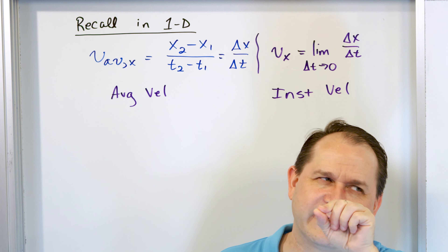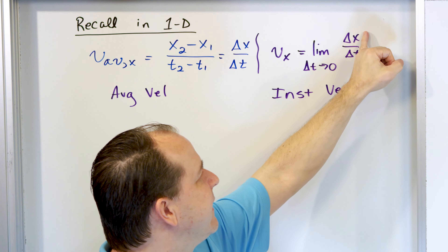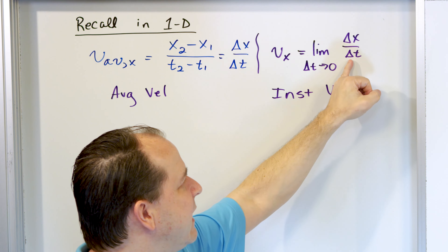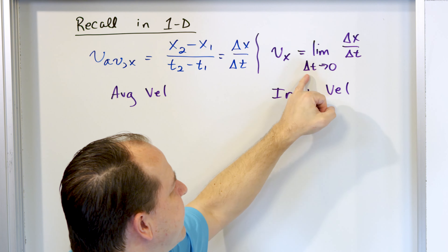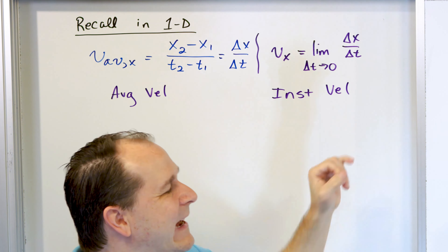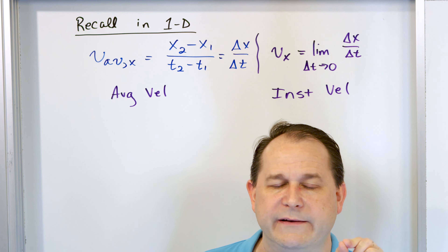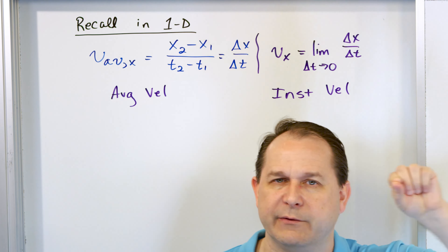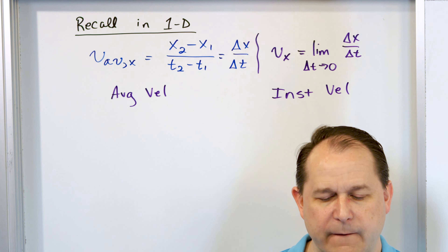That's why delta t goes to zero. Of course it's going to move a tiny distance also. We take this tiny distance divided by this tiny time, as it continues to shrink down to zero — distance divided by time — and that's called the instantaneous velocity at a single point. This is only in one dimension, because this is a review of what we already know.